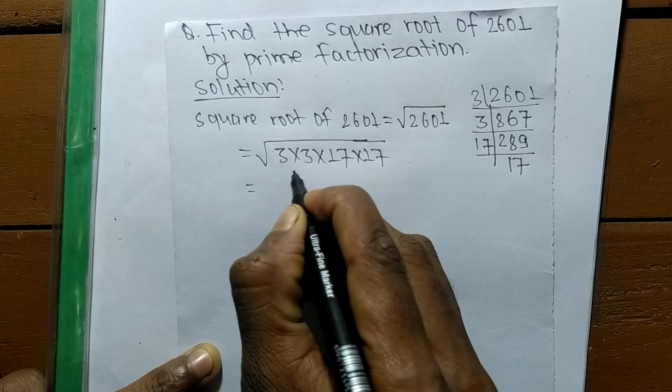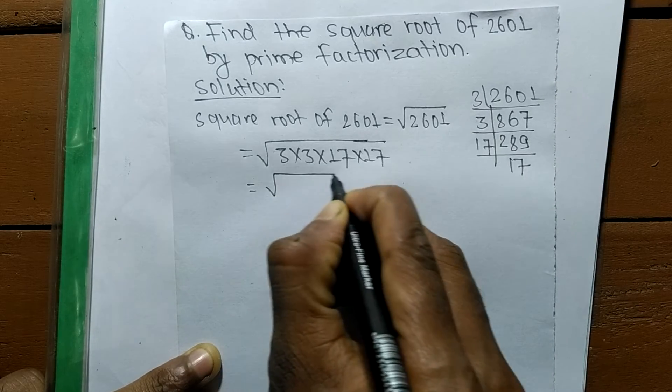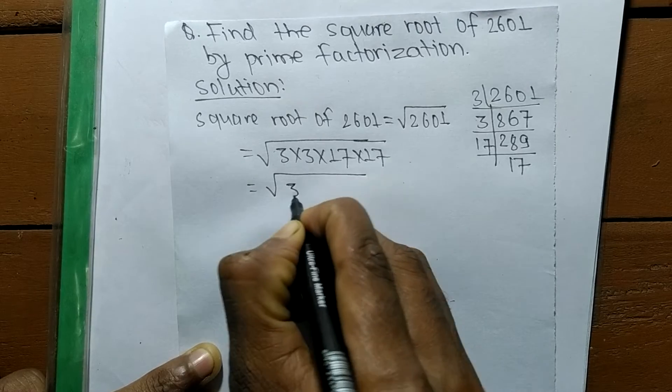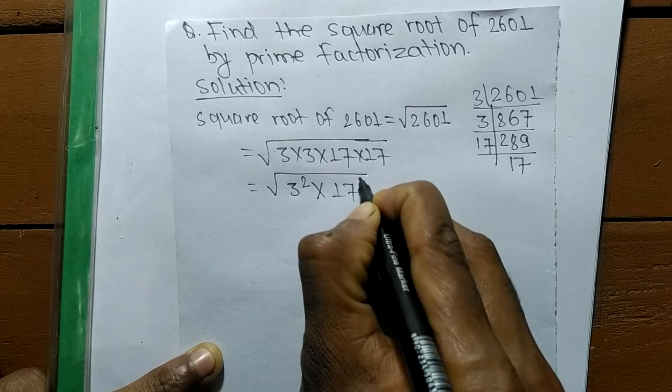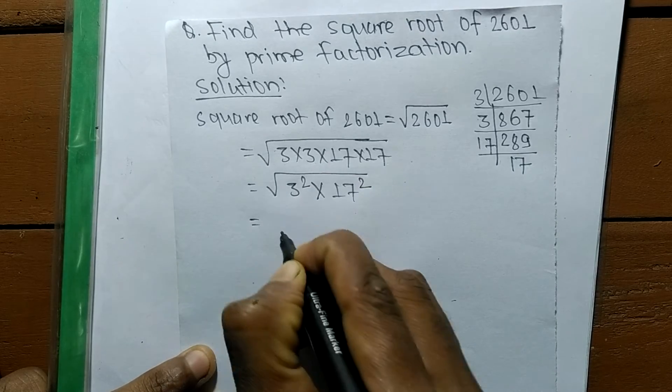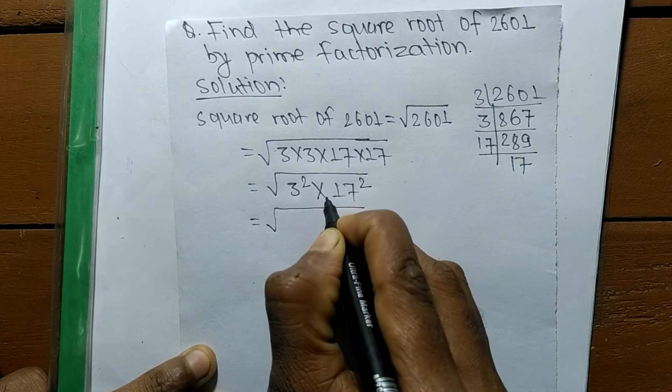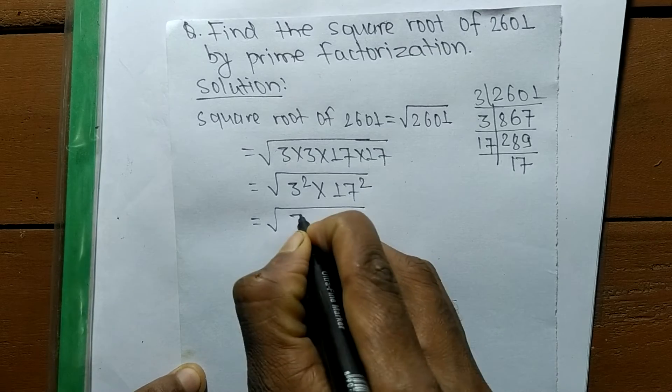So we are finding a square root, so we will make the square root of all these numbers. 3 times 3 means it is 3 square, like 17 times 17 means it is 17 square.